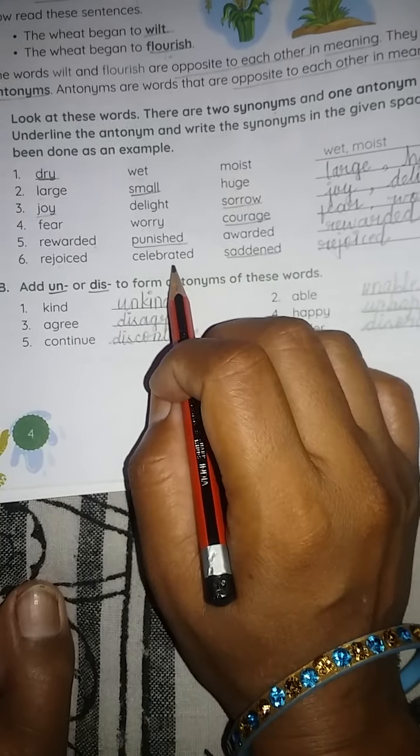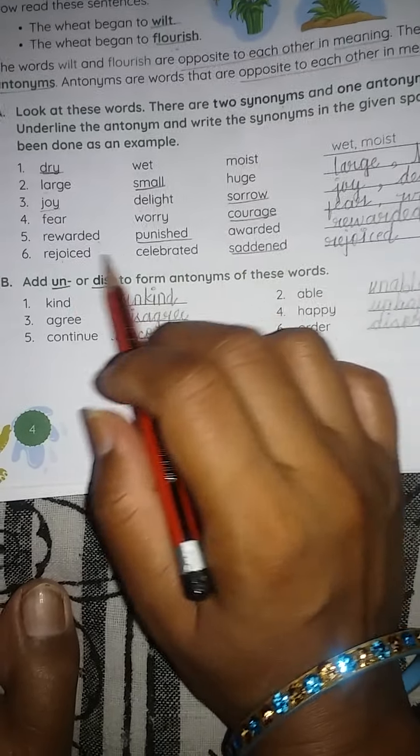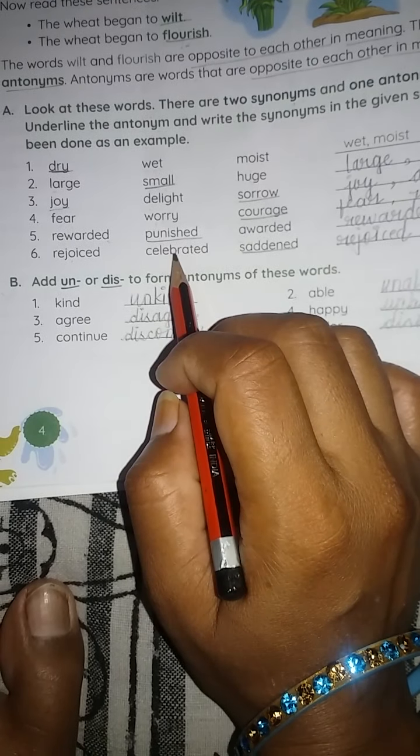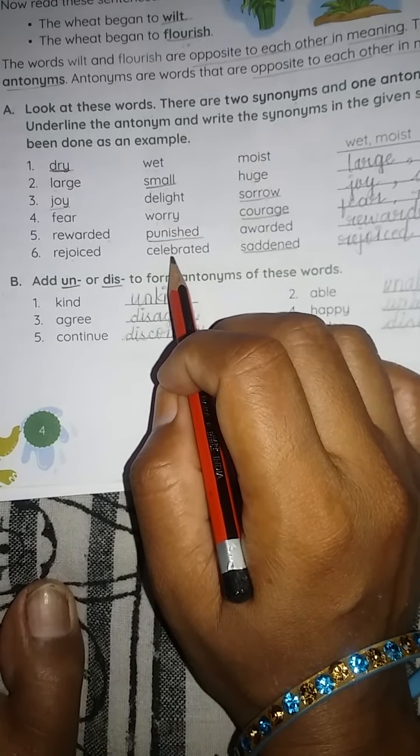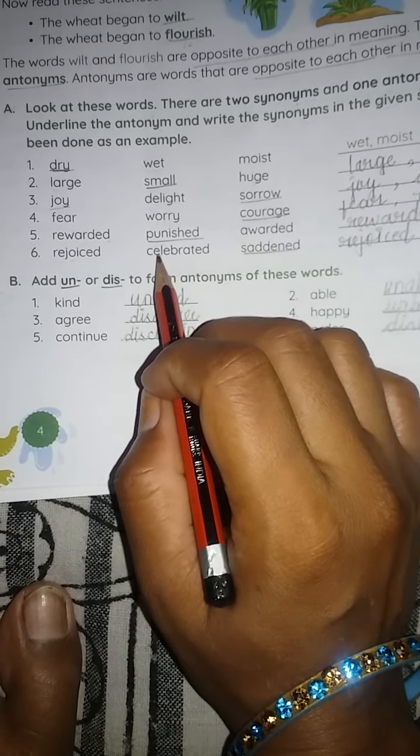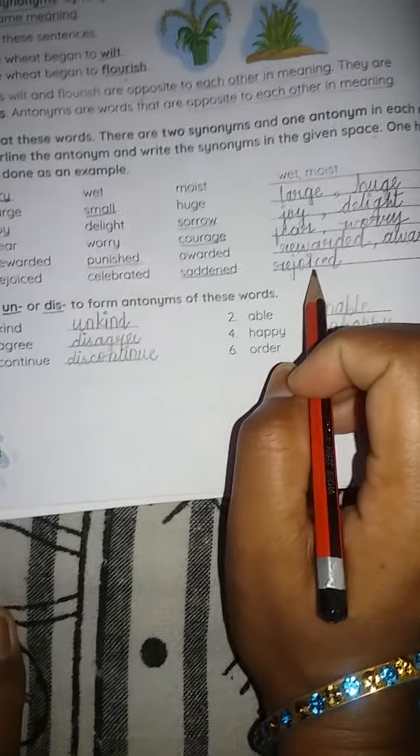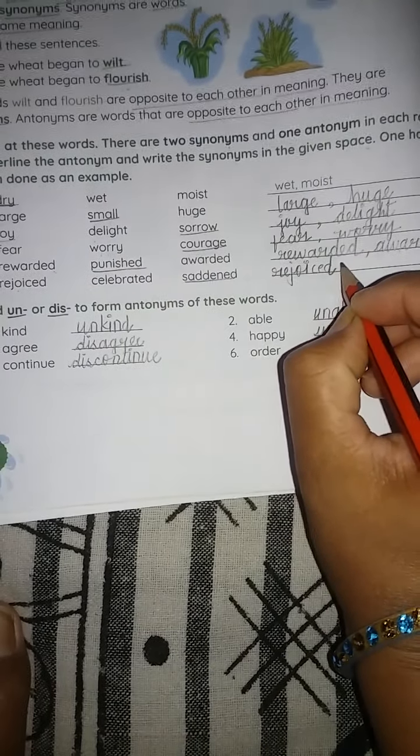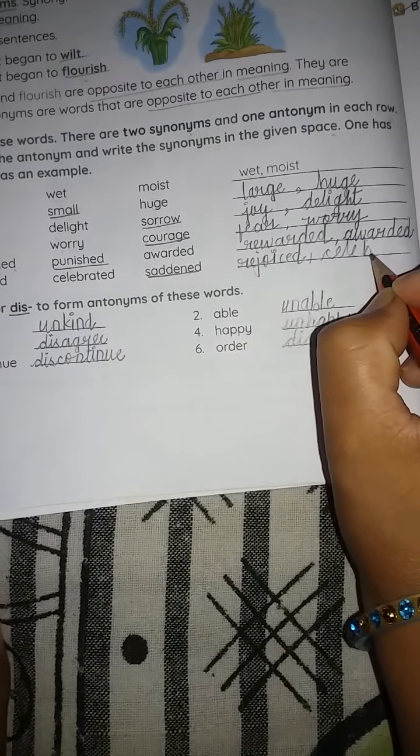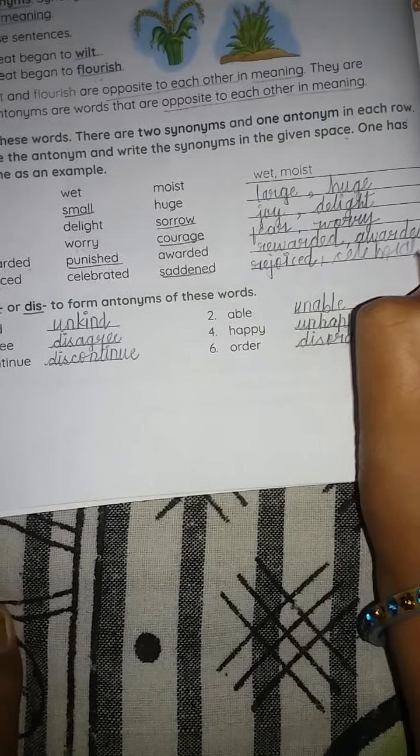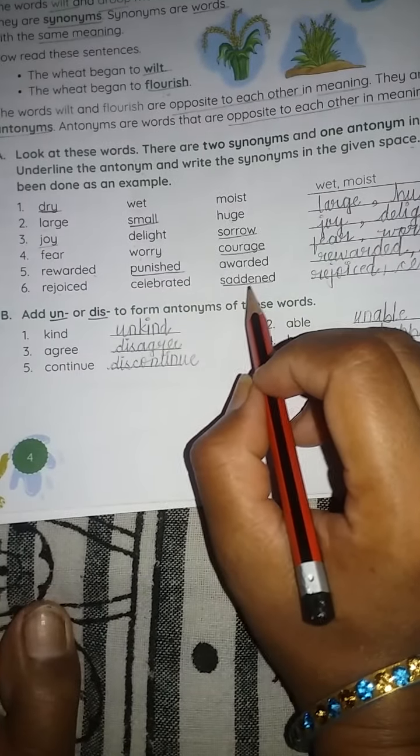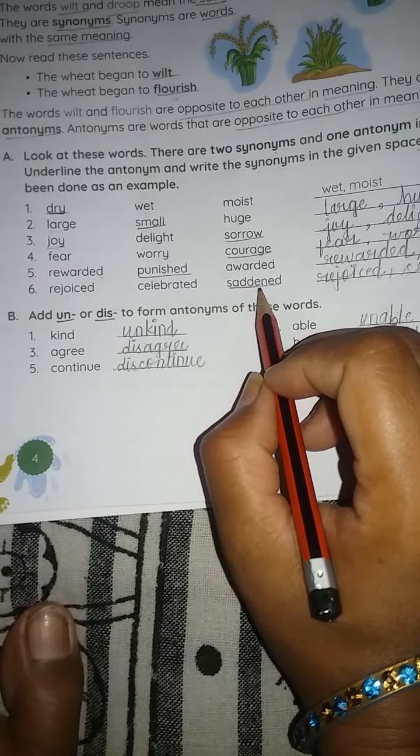Next we have rejoiced, celebrated, saddened. Rejoiced means bhi khushi hota hai, khushi ho kar khushi hona. Celebrated bhi celebrate kab karte hai? Manate kab hai kisi cheez ko jab bahut khush hota hai. So these two have the same meaning. So these two will be written over here: rejoiced, celebrated. And saddened is opposite of these two. So this is an antonym, so this would be underlined. Thank you.